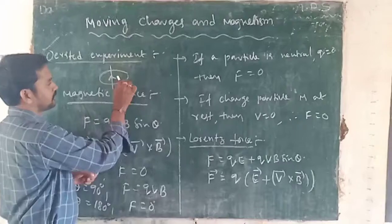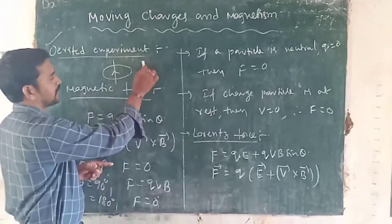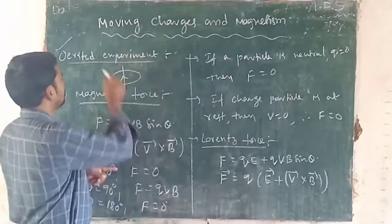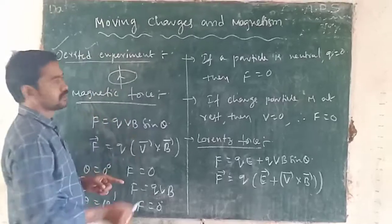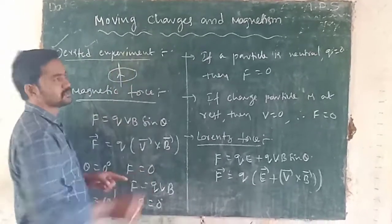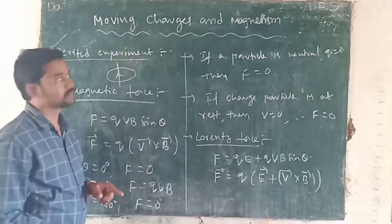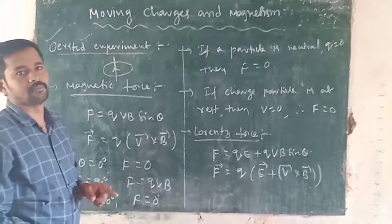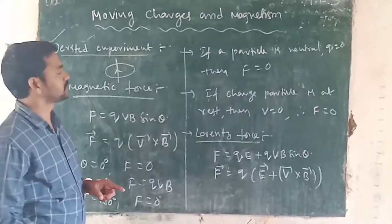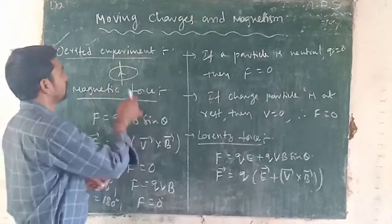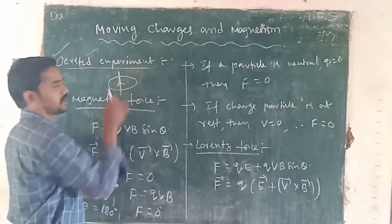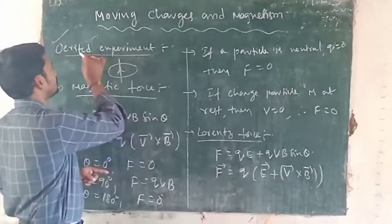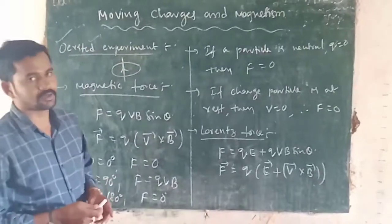When the current is in the opposite direction, the magnetic needle shows deflection in the opposite direction. So he concluded that the current-carrying conductor produces a magnetic field — meaning moving charges produce a magnetic field. Also, the current-carrying conductor produces a magnetic field. That is the concept of Oersted's experiment.